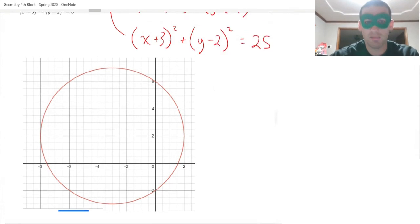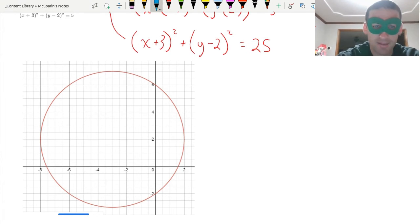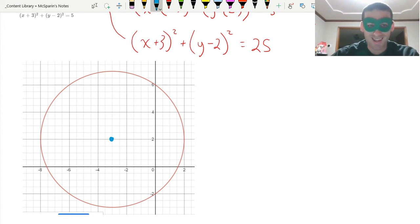Alright, so what I can see is that I have a center at negative 3, 2, and I have a radius. Now this is scaled a little bit funny, right, so every two spaces is one.